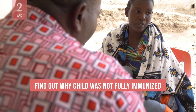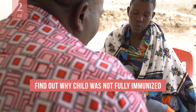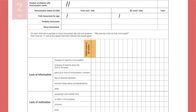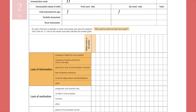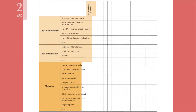Next, if a child is partially or never immunized, find out why. Write the name of the child and ask the caregiver why the child is not fully immunized. Listen closely to the caregiver's response. Think about whether the lack of immunization is due to lack of information, lack of motivation, or other obstacles.